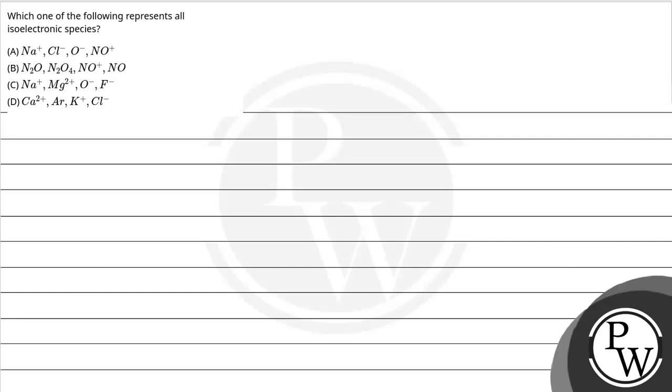So let's read the question. The question says which one of the following represents isoelectronic species? Now the key concepts related to this question - that is the periodic trend.